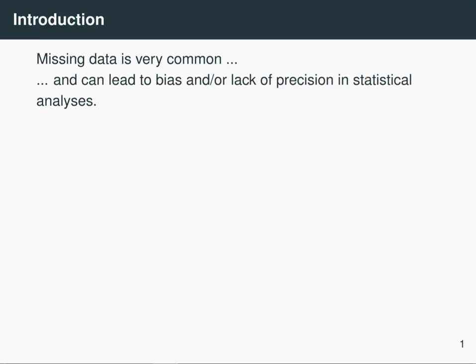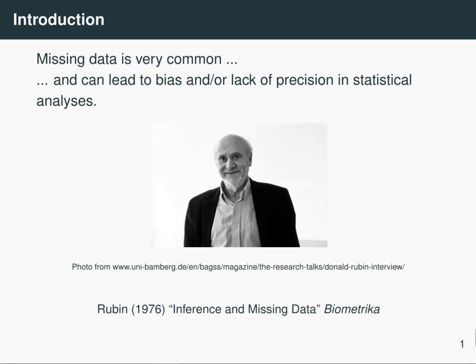Missing data can lead to bias and lack of precision if you don't deal with it in an appropriate way. It was Donald Rubin who came up with this typology for missing data assumptions in his Biometrika paper from 1976.